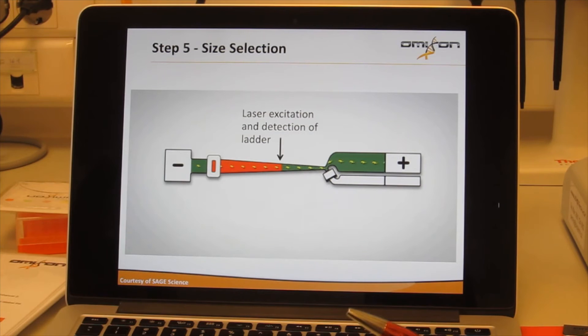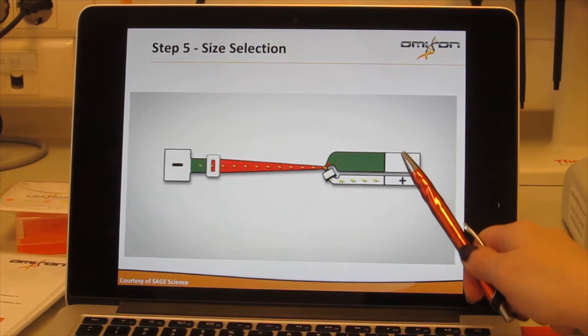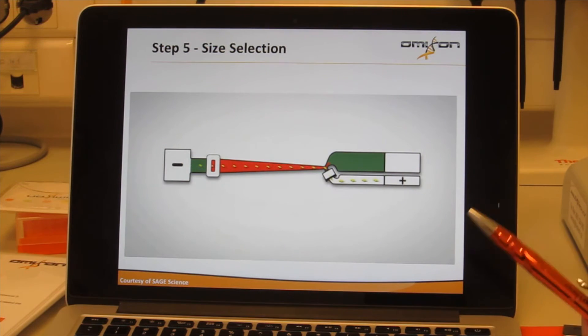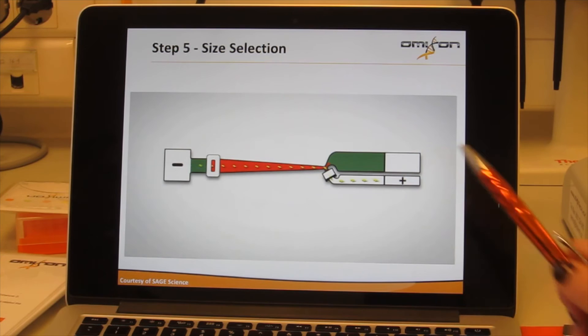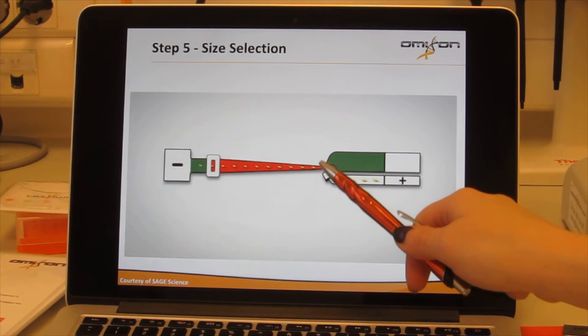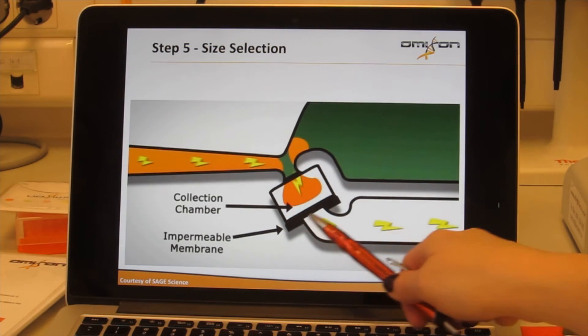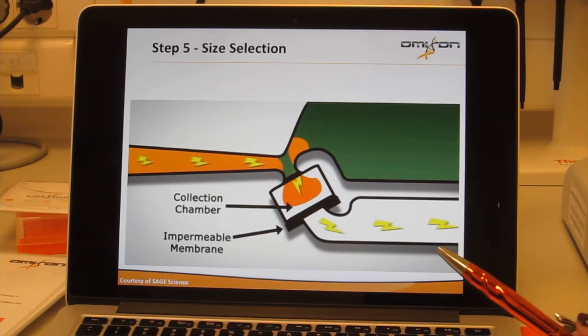Based on these two time points, the machine will calculate how much time a fragment size of 650 base pairs that we want to start collecting from will take to reach the same point. When the time has come, the positive electrode from one branch will be turned off and the positive electrode on the other branch will be turned on. As a result, the fragments that we want, instead of going into the agarose gel, will fall into the little collection chamber right here on the other side.